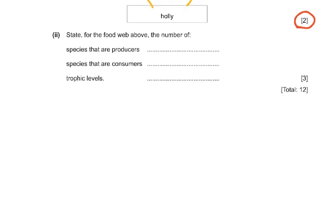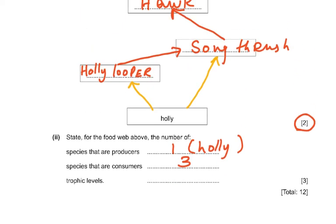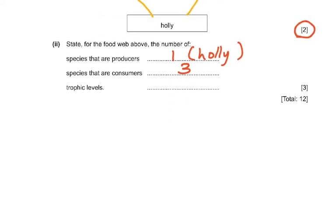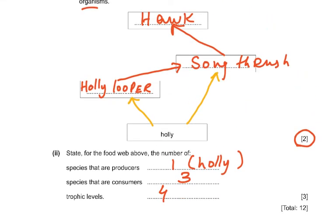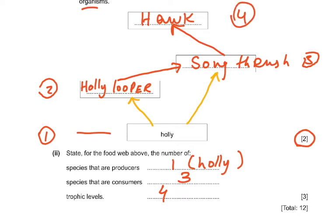State the number of producers, consumers, and trophic levels in the food web. The producer is one — the holly. The consumers are three: holly looper, song thrush, and hawk. The trophic levels are four: the holly is trophic level one, holly looper is two, song thrush is three, and hawk is four. Always remember the producer is the first trophic level.